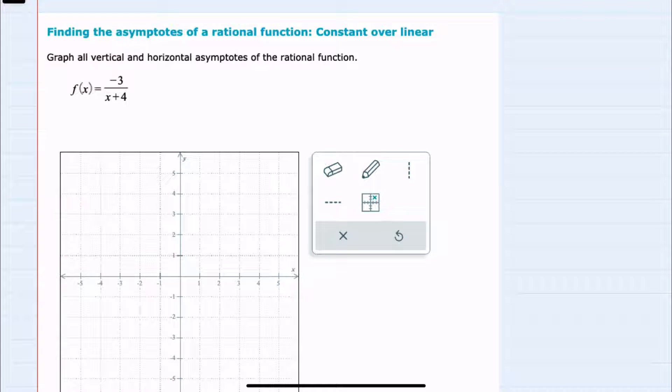In this video, I'll be helping you with the ALEKS problem type called finding the asymptotes of a rational function, constant over linear. We're given our function here, f of x, and we're asked to find both vertical and horizontal asymptotes and to graph them.